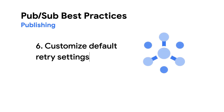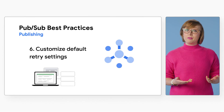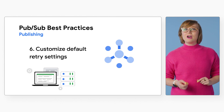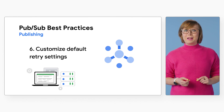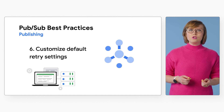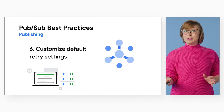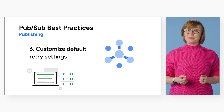And number six: customize your own default retry settings. When publish requests timeout, you will get deadline exceeded errors. These are automatically retried by the client libraries, but you can tweak the default retry settings with different initial timeout, retry multiplier, and total timeout values. Check out the PubSub documentation to learn more about recommended initial deadline and total timeout.